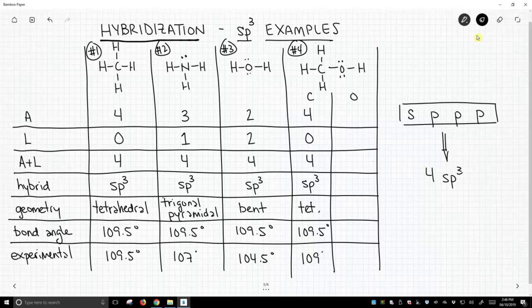Finally, the oxygen. This oxygen has two attached atoms, a carbon and a hydrogen. It has two lone pairs. A plus L equals four. That leads us to sp3. Its geometry is bent. 109.5 is what we predict, and indeed, again, the bond angle is very close to 109 degrees.